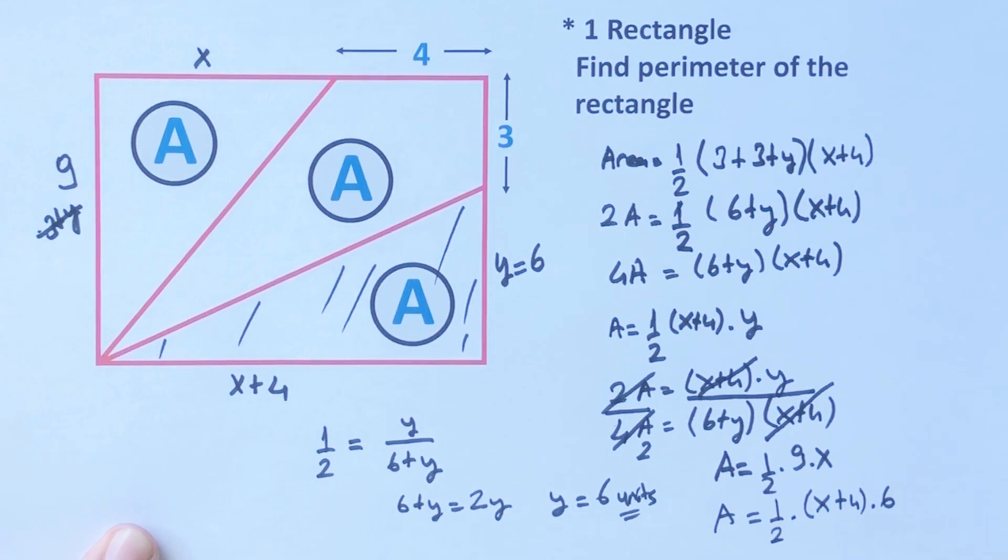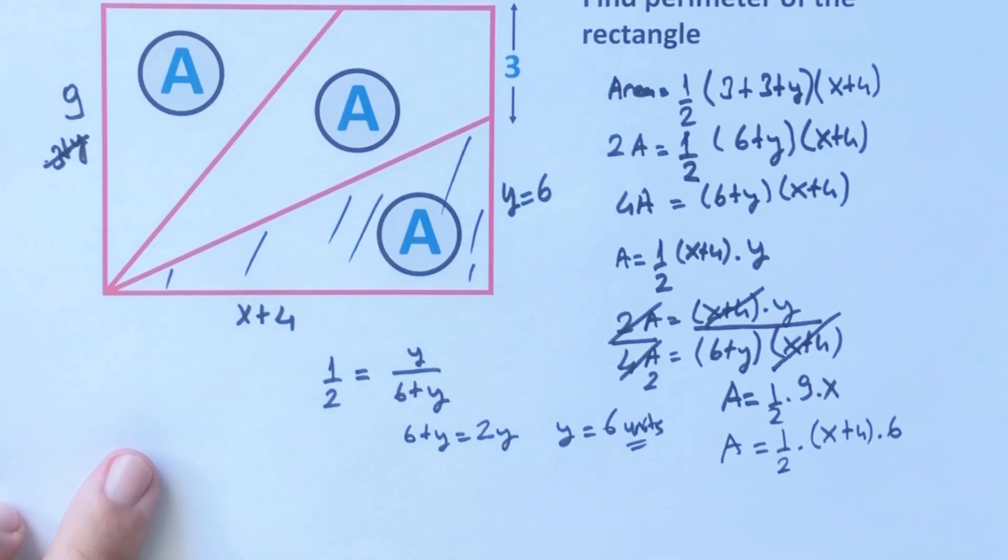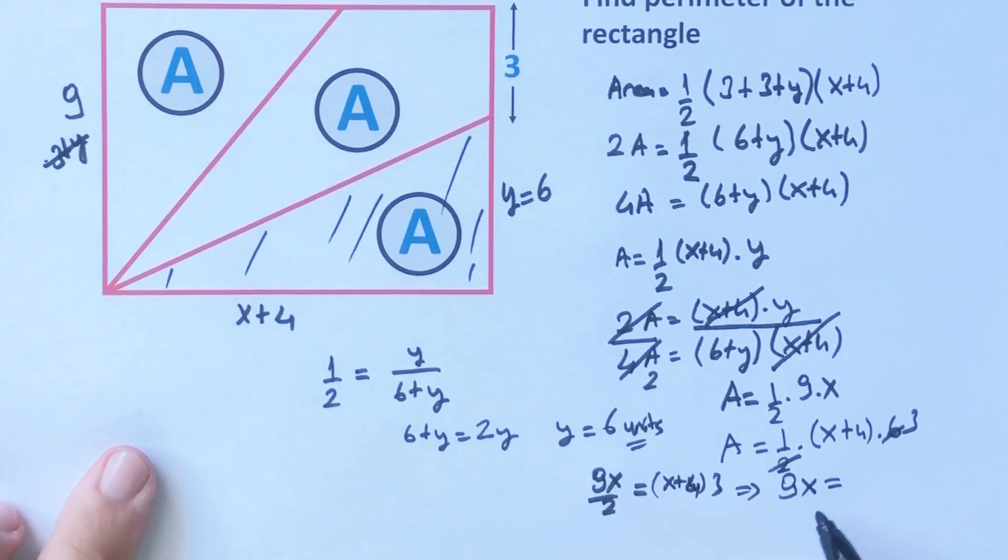So these two equations are equal, as you can see. Therefore, if we equalize these two equations, 9x over 2 equals, let's simplify the equation, x plus 4 times 3. Therefore, 9x equals 6x plus 24. Therefore, 3x equals 24, so x is going to be 8 units.